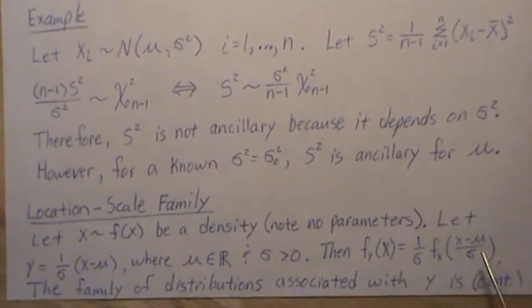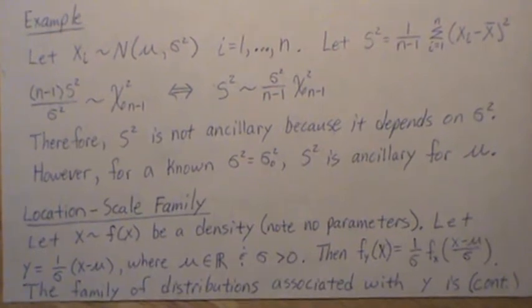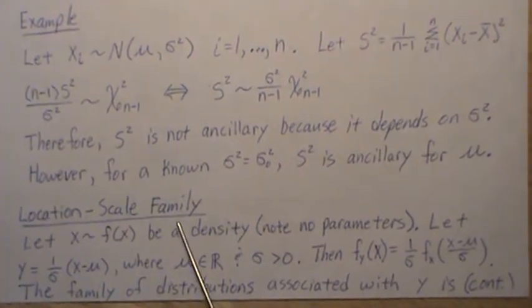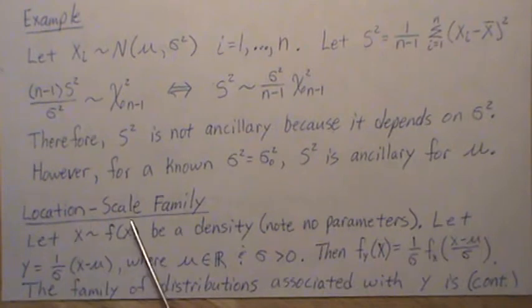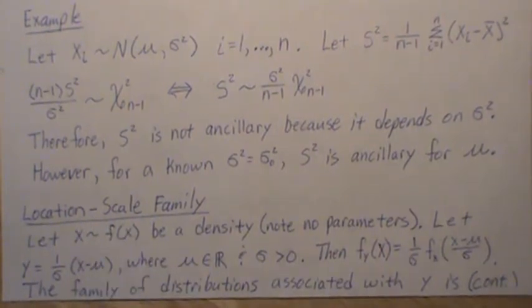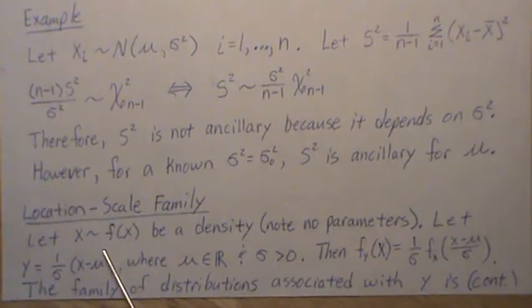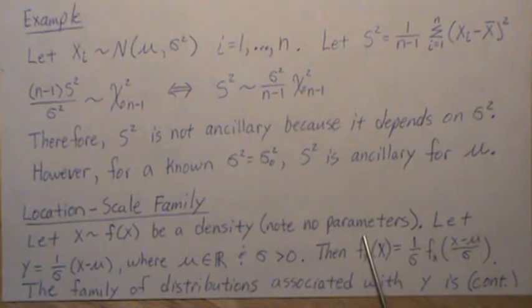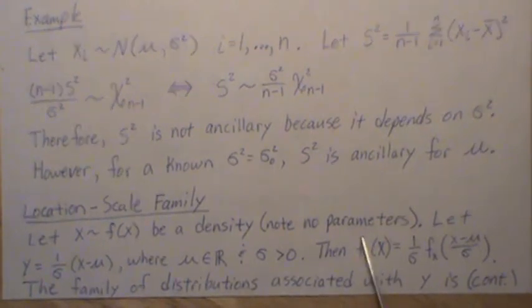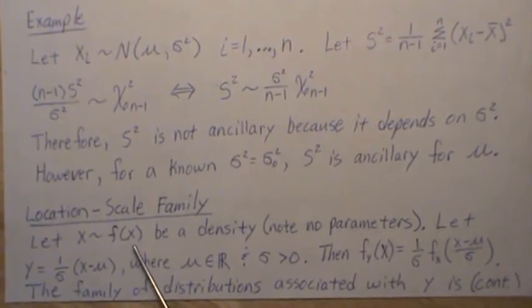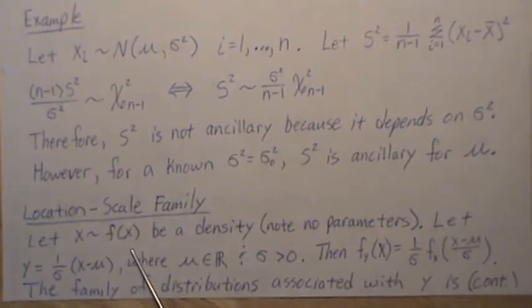Now, a concept that we're only going to touch upon, and maybe I'll add a video describing this in much more detail, but we have what's called a location scale family. And there's also what's called location families and scale families, but we're combining them into a location scale family. So let X be distributed with F, and then let it be a density. Note there's no parameters here in this function. And so my mindset is, think of the standard normal distribution where the mean is 0, the variance is 1. There's no parameters in that. So that's what this represents. Or a uniform 0, 1 random variable. There's no parameters.